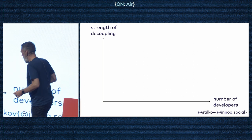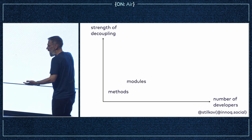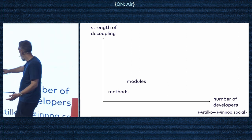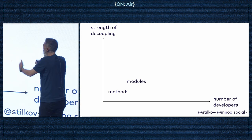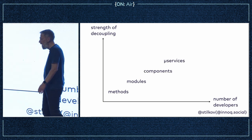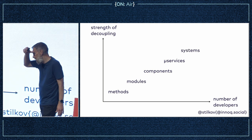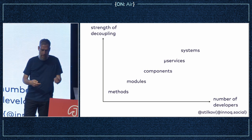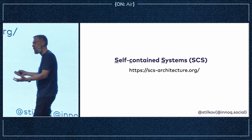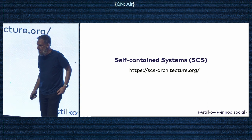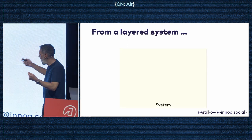I've picked out the decision of how to modularize. If you're building a very small thing, your modularization might just be using a number of methods or procedures. As things grow you might end up with modules. The two axes here are the strength of decoupling and the number of developers involved. As the number of developers and the size of the problem grows, you use different strategies — you might end up with components or even microservices. Above that there's a larger-grain level I like to call systems. There's a website about self-contained systems if you want to read more.